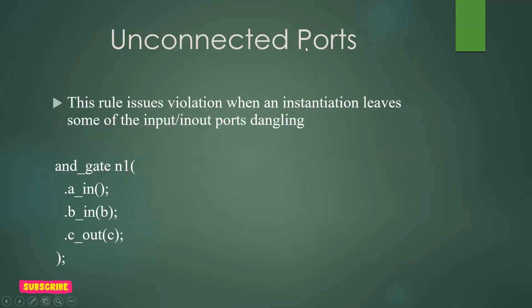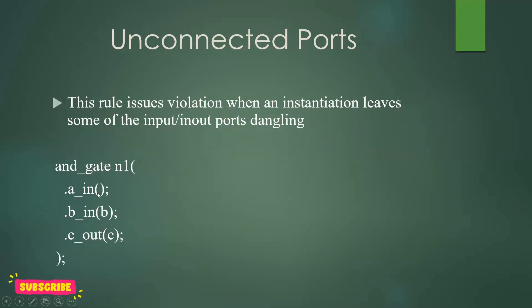Next is unconnected ports. This mainly occurs when you are instantiating a module inside another module. For example, instantiating a gate with two inputs a, b and output c — but port a is not properly connected to any signal while b is connected to b and c is connected to c. If such a thing happens, the linter must flag a message indicating an unconnected port problem.